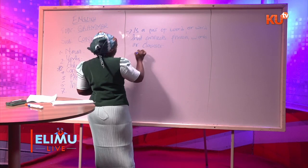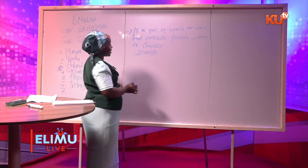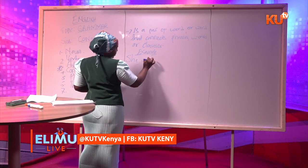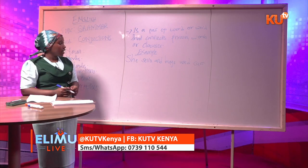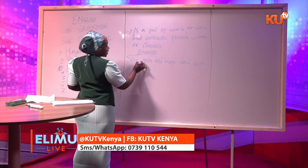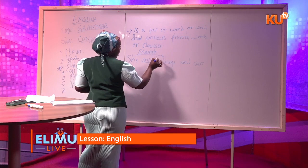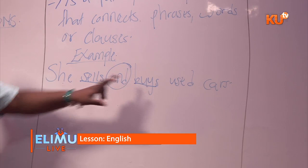For example, in a sentence like 'she sells and buys,' we have used a conjunction to connect words. The words connected are 'sells' and 'buys,' and the conjunction in that sentence is 'and.' We have used 'and' to connect the words 'sells' and 'buys.'